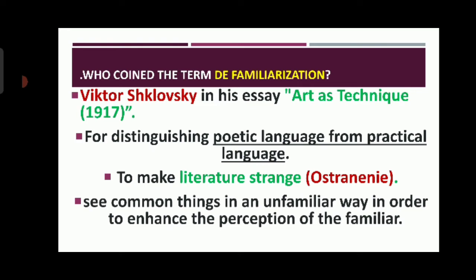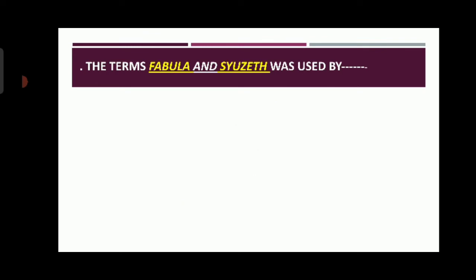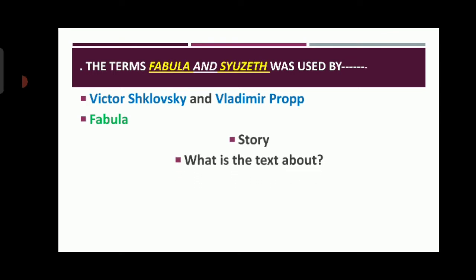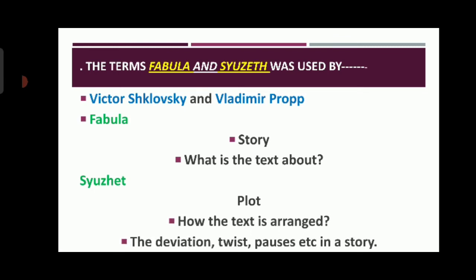Shklovsky used many examples from Tolstoy. The terms fabula and syuzhet were used by Viktor Shklovsky and Vladimir Propp, and first originated in Russian formalism, later employed in narratology. Fabula means the story — what the text is about — in chronological order with no stylistic or formalistic elements; it is the raw material. Syuzhet means the plot — how the text is arranged using deviation, twists, pauses, etc. For example, Shakespeare's tragedies are based on historical events, but he defamiliarized the story using different verbal techniques and made it popular.